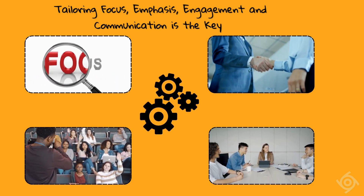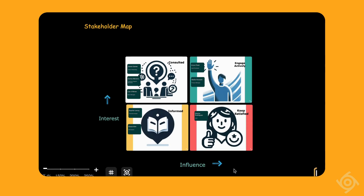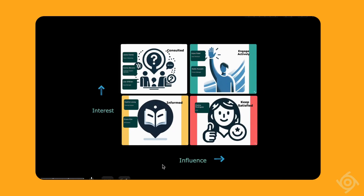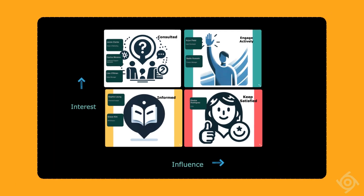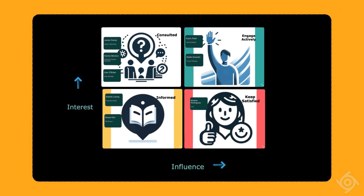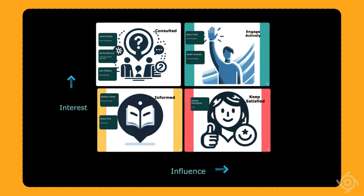As you can see, the stakeholder map is a matrix between influence and interest. The x-axis indicates increasing influence as you progress from left to right, while the y-axis indicates increasing interest or involvement as you progress from bottom up. And the matrix is divided into four quadrants.